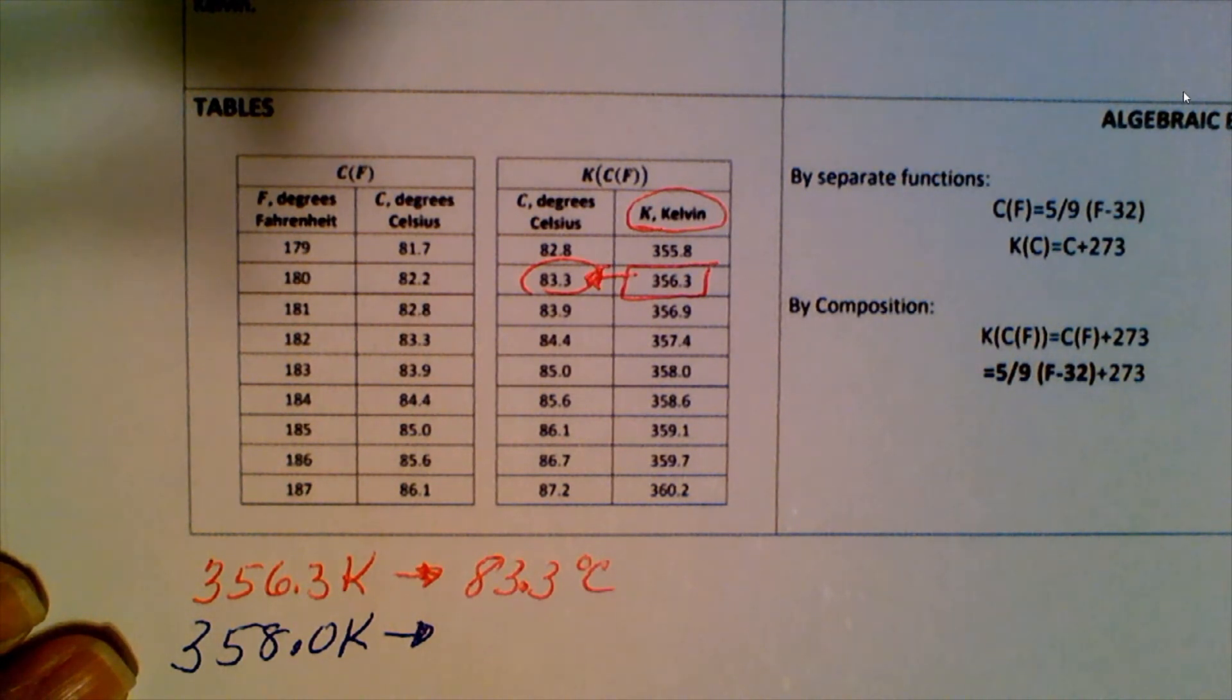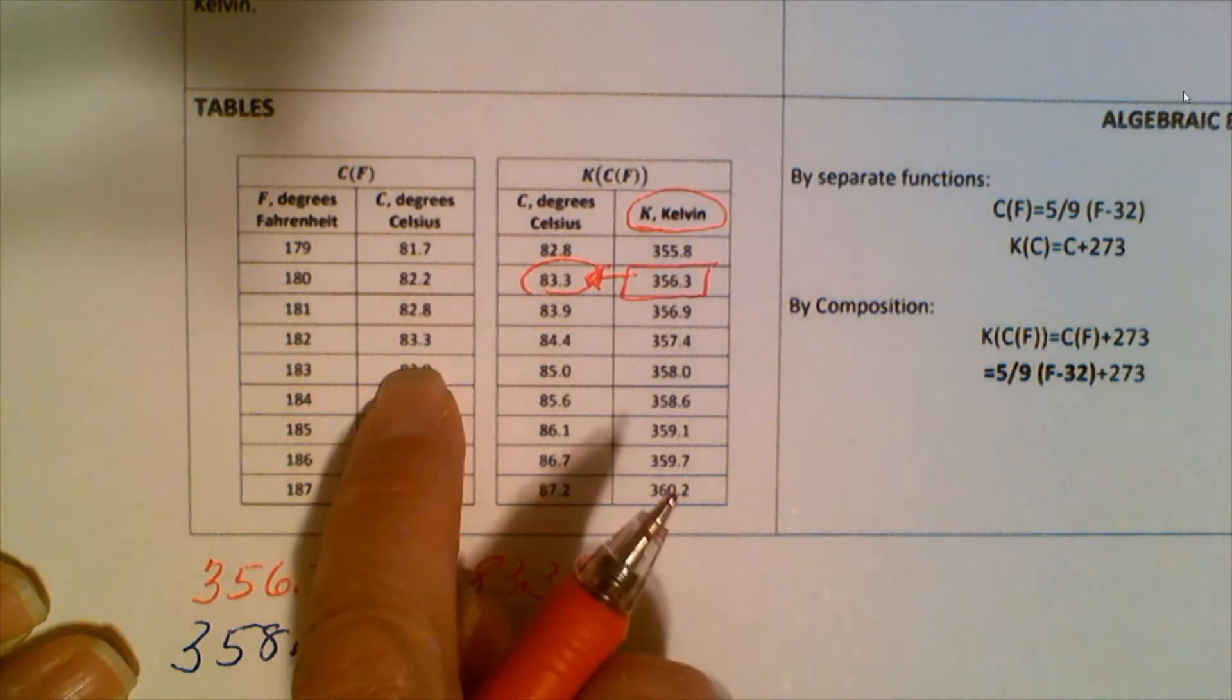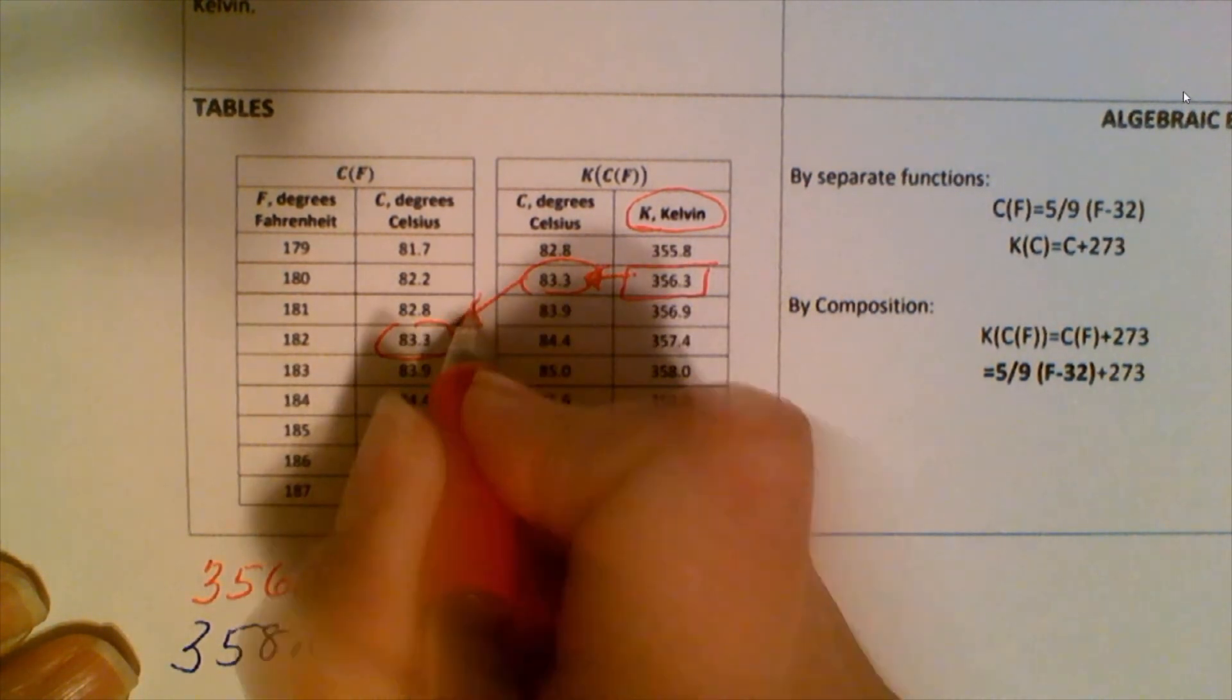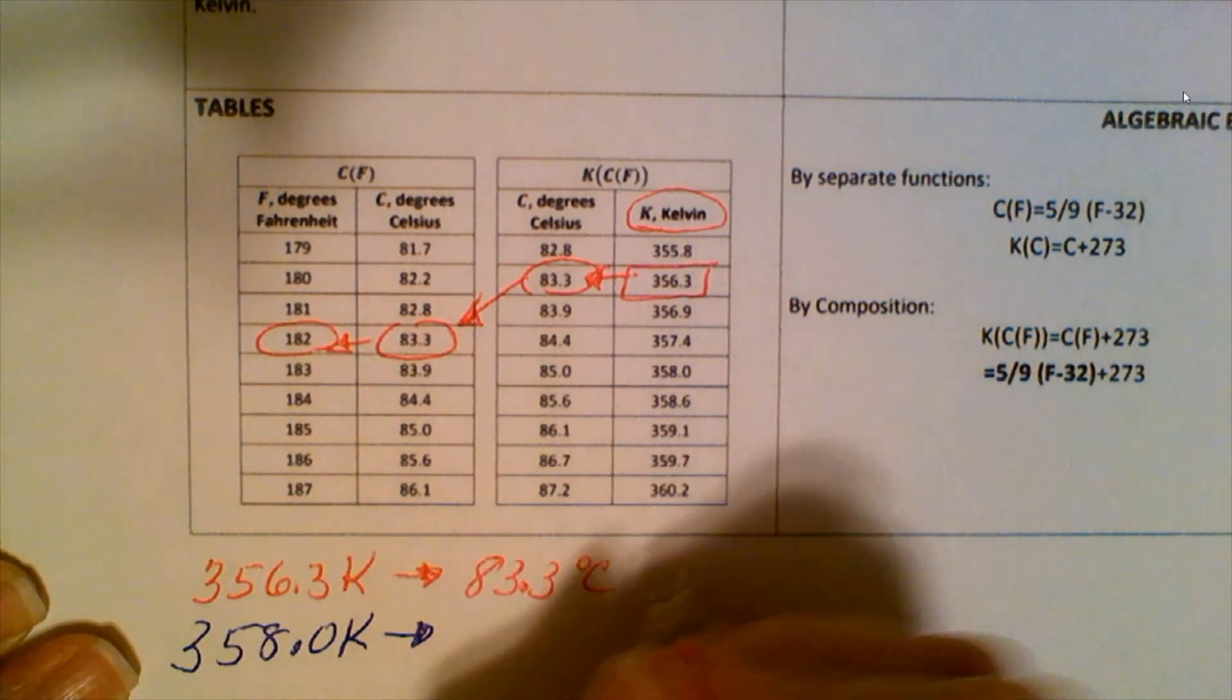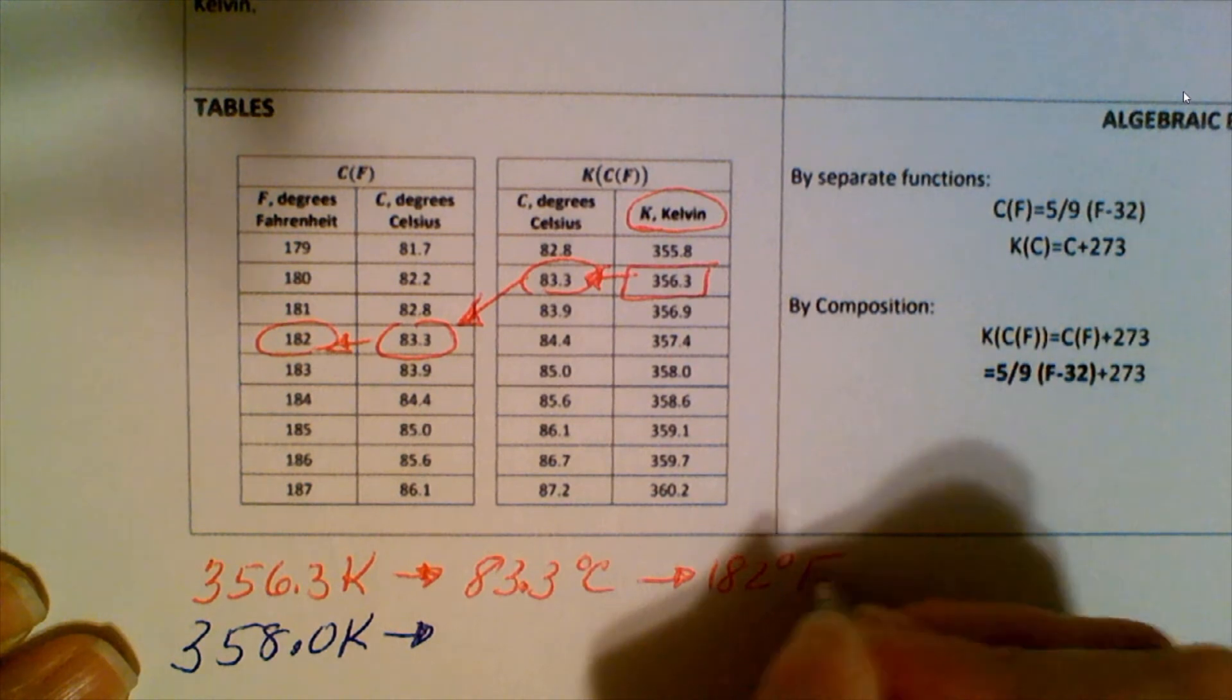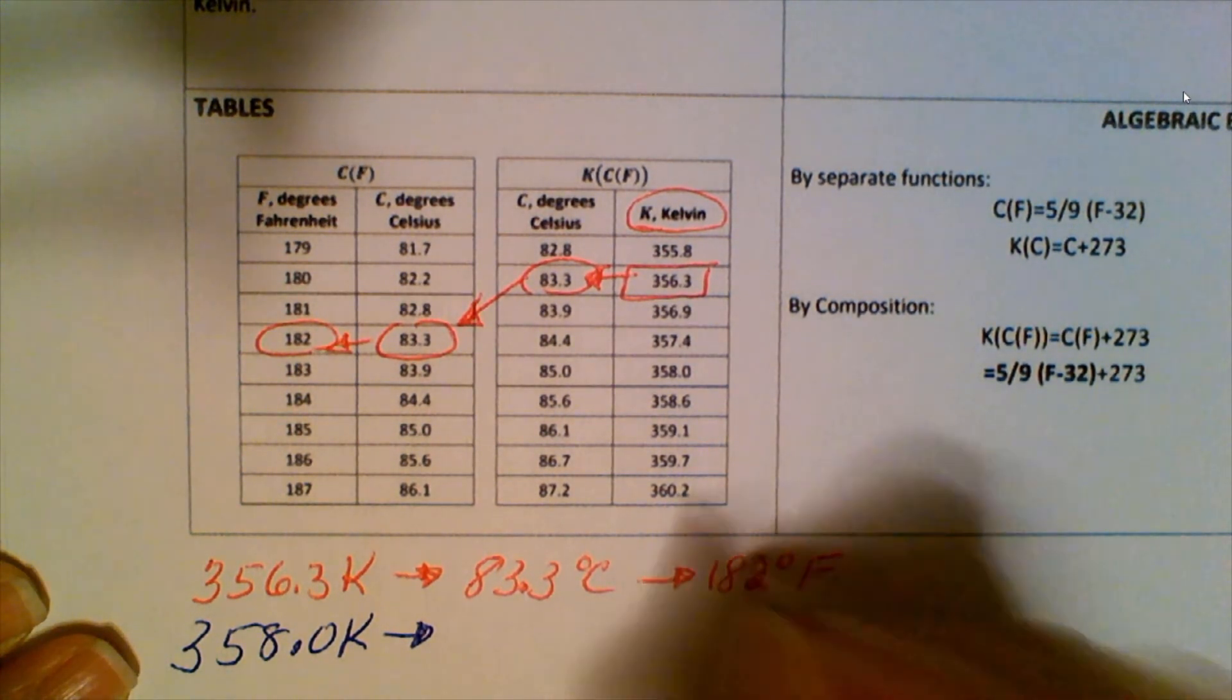We take that value and backtrack it again. We find the 83.3, and we end up at 182 degrees Fahrenheit. Now we know what the original temperature was that she recorded.